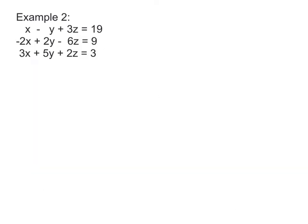Here's example 2. We're going to use elimination again. That's my preferred method. So I'm going to number my equations 1, 2, and 3. When I look at this, I see x being the easiest variable to eliminate because this 1x can easily be multiplied to 2 or 3.